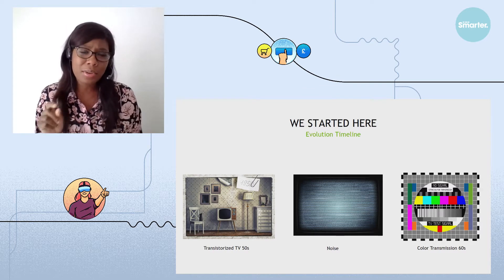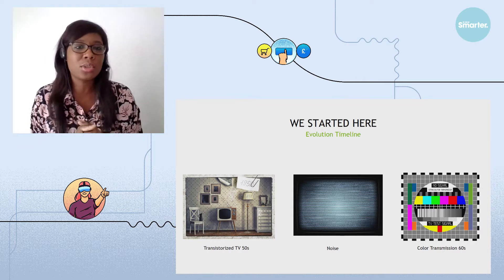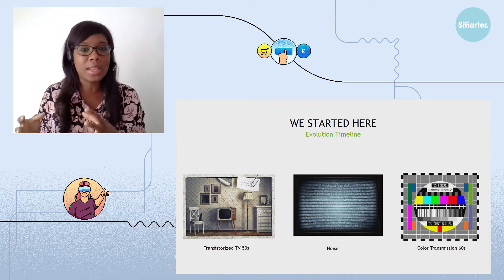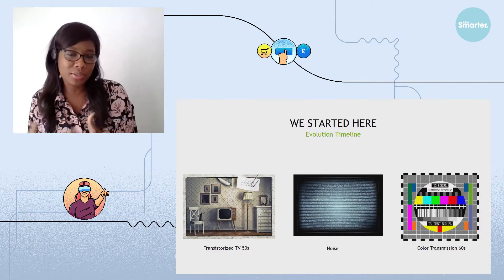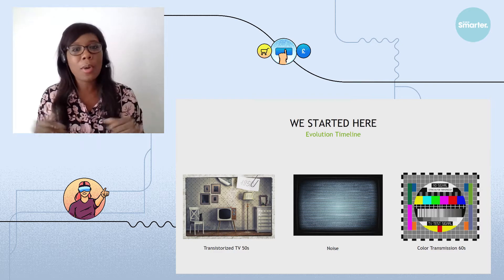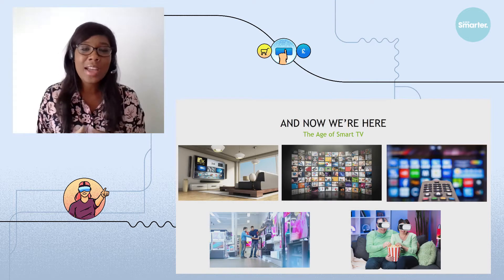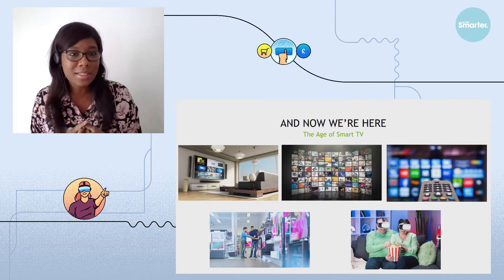And there were only very few programs at that time. Then when we moved into the 60s, we went into color transmission and that's when the golden age of TV or mainstream TV started. It took us quite a while to bring us where we are now, which is the age of smart TV.